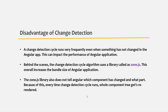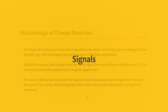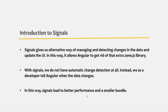To overcome all these problems, Angular has introduced signals in Angular version 16. Signals give us an alternate way of managing and detecting changes in data and updating the UI, allowing Angular to get rid of the extra zone.js library. With signals, we do not rely on the change detection cycle to detect changes and update the UI, so we don't need that library at all. Instead, we as developers tell Angular when the data changes and where the data is used, so Angular knows exactly which part of the UI needs to be updated.